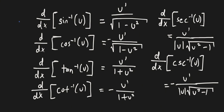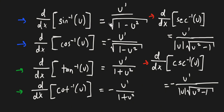Now let's think about the patterns. Sine and cosine are related, tangent and cotangent are related, and secant and cosecant are related. For all of them, you always have u prime on top. For sine and cosine, just remember the square root with 1 first, then minus u squared. For secant and cosecant, you have u squared first, then minus 1 — and don't forget the absolute value of u, which only appears in those two.